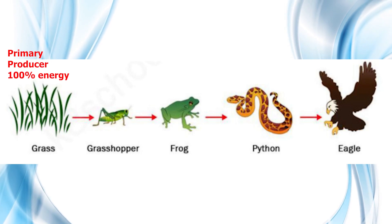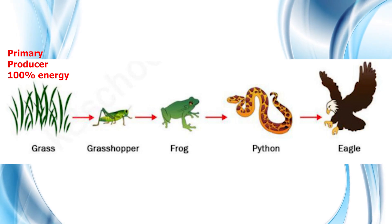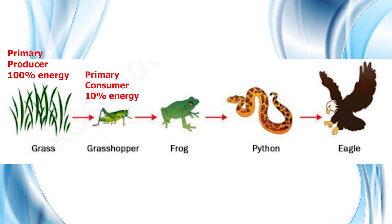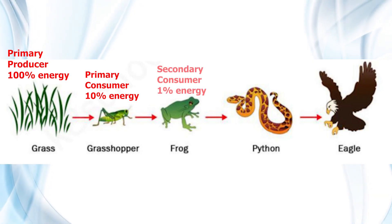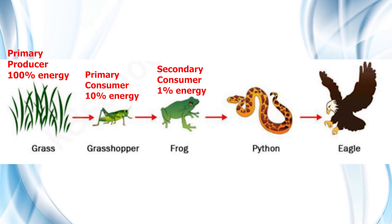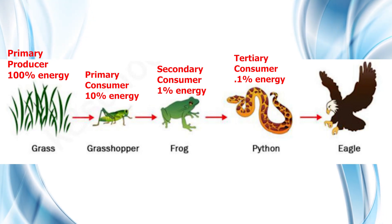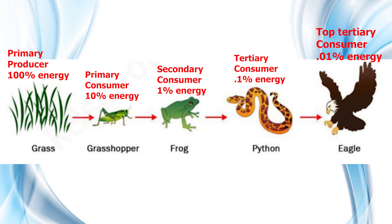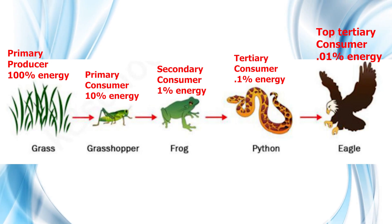Now let's take a look at the following food chain. Primary producers contain 100% of the energy in the food chain. The primary producer is then eaten by the primary consumer, which is the grasshopper, who receives 10% of the energy from the grass. The grasshopper is then eaten by the secondary consumer, the frog, who receives 1% of the energy. The frog is then eaten by the snake, or tertiary consumer, who receives 0.1% of the energy. The snake is then eaten by the top tertiary consumer, which is the hawk, who only receives 0.01% of the energy.